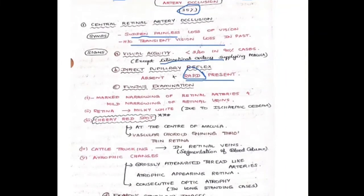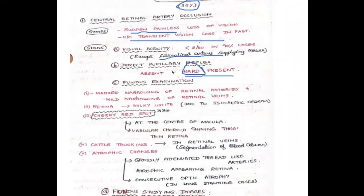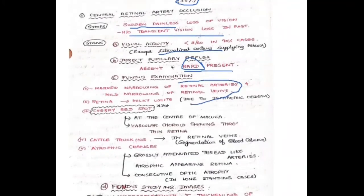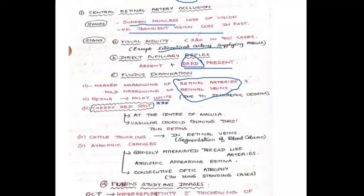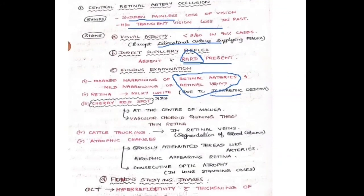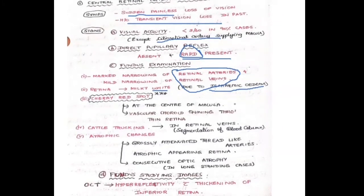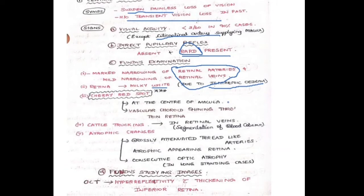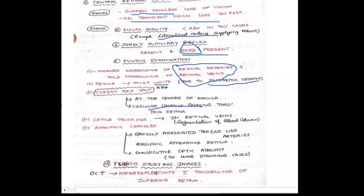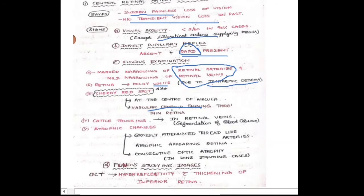On fundus examination, there is marked narrowing of retinal arteries and veins. The retina appears milky white in color due to ischemic edema from the occluded vessel reducing blood supply. Cherry red spot is seen at the center of the macula — the retina is thin and pale, so the richly vascular choroid shines through the thin retina, appearing as a cherry red color.